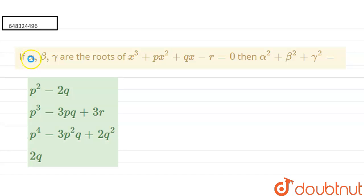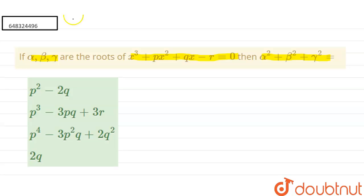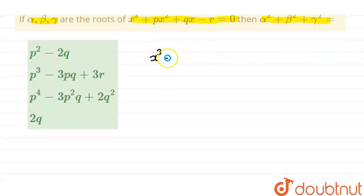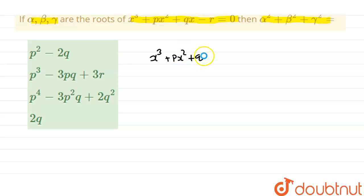Hello, the question is: if alpha, beta, gamma are the roots of the equation x³ + px² + qx − r = 0, then alpha² + beta² + gamma² is equal to what? Four options have been given and we have to choose the correct one. First of all, we will write the given expression: x³ + px² + qx − r = 0.